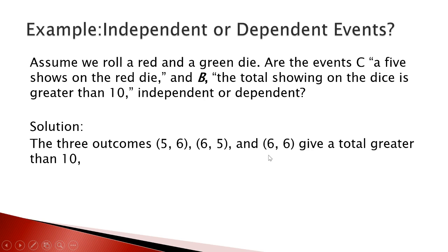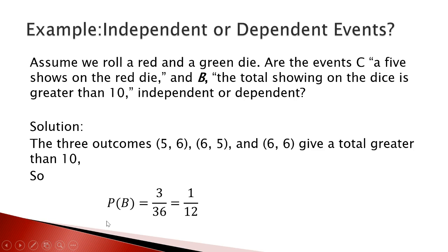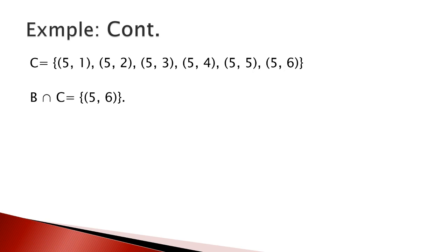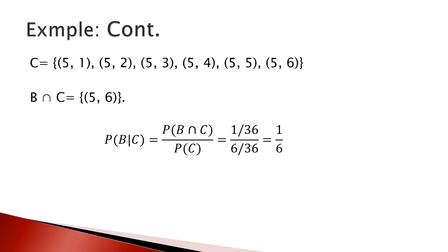The three outcomes (5,6), (6,5), and (6,6) give a total greater than 10, so the probability of B equals 3 over 36, which simplifies to 1 over 12. The elements of C are: (5,1), (5,2), (5,3), (5,4), (5,5), and (5,6) — six elements in C. In the intersection there is only one element: (5,6). Now we use the general rule to calculate the probability of B given C.